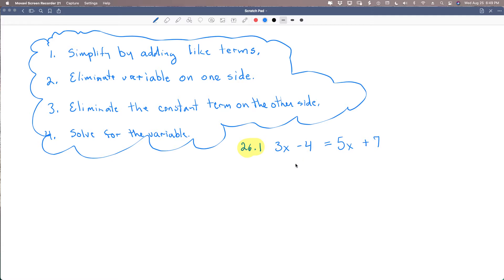All right, so first things first, we simplify by adding like terms. Do we have any like terms on this side? No, we have a constant and a constant with a variable. Same thing over here. We don't have any like terms on this side. So step number one, we can't do it. We skip it, go to step number two.